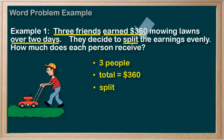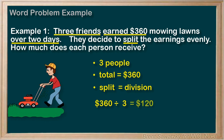All right, on to step 3: strategize and solve. That word 'split' — we remember that's a term indicating division. So splitting $360 between three people is a division problem. $360 divided by three equals $120 each. That looks like it might be our solution.